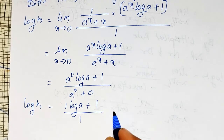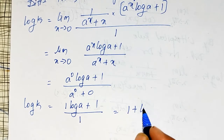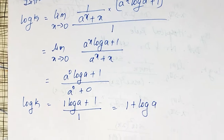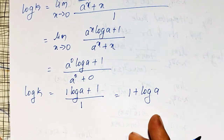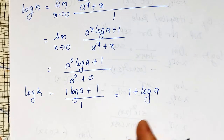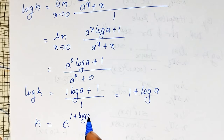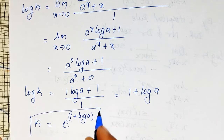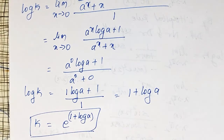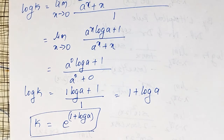That gives log k equal to 1 plus log a. Therefore, k is equal to e raised to the power (1 plus log a). This is how to evaluate limiting forms of the 0 by 0 or 1 raised to infinity type.